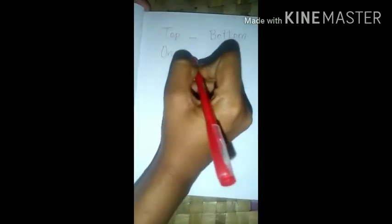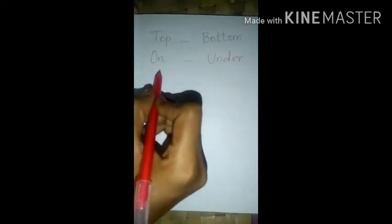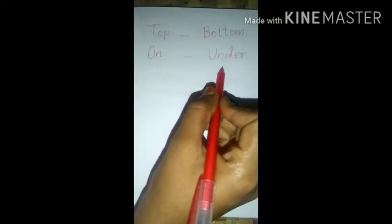The same meaning: 'on' — O-N — also means mele. 'Under' — U-N-D-E-R — means adiil, keele (below/under).